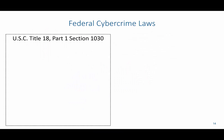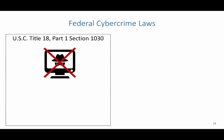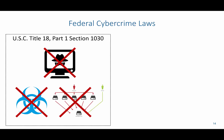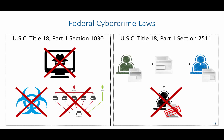Two primary federal cybercrime laws you need to be familiar with are: United States Code, Title 18, Part 1, Section 1030, which states that hacking is illegal — getting into a system you're not authorized to access is illegal, as is sending malware or engaging in denial-of-service attacks. And United States Code, Title 18, Part 1, Section 2511, which states that you cannot intercept messages in transit or even after they've been received and stored.